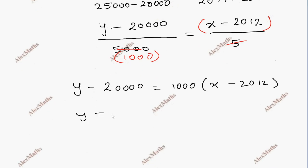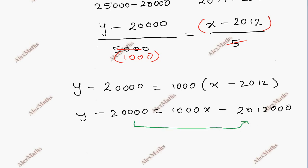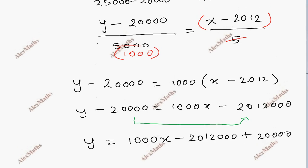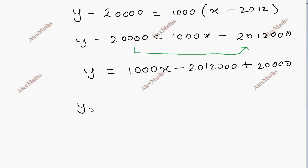Since 5,000 divided by 5,000 equals 1, we get: Y minus 20,000 equals 1000x minus 2,012,000. So y equals 1000x minus 2,012,000 plus 20,000.